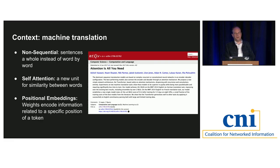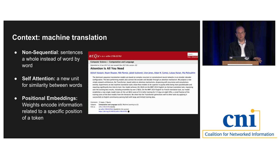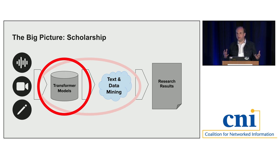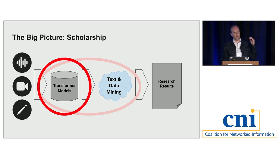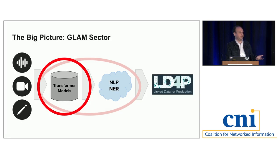We found transformers first in machine translation, but it's exciting to see them applied beyond that domain — in areas relevant to the GLAM sector. For faculty or graduate student researchers, this is mainly about getting complex non-textual data — sound, pictures of handwriting, film frames — into textual form. For library work, transformer models help get non-textual data to a place where we can do named entity recognition and put things into RDF tuples.